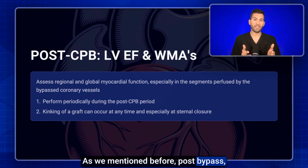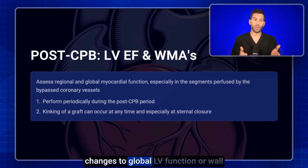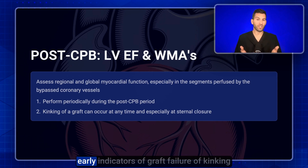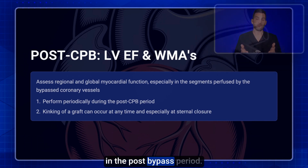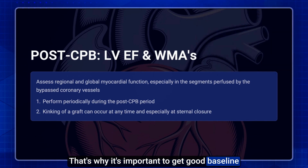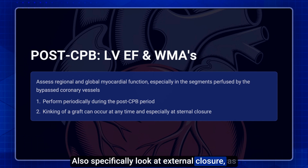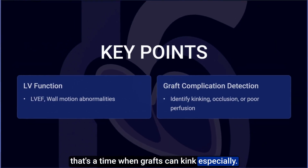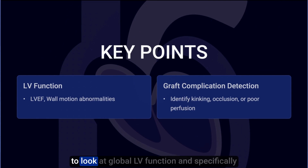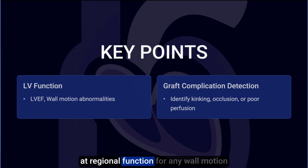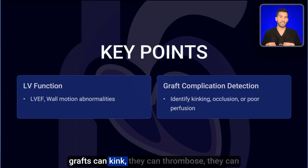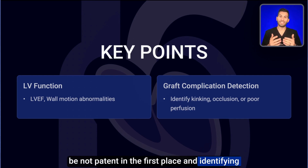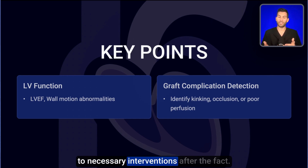Post-bypass, keep an eye on any changes to global LV function or wall motion abnormalities, as these may be early indicators of graft failure, graft kinking, or thrombosis. Monitor periodically throughout the post-bypass period. That's why it's important to get a good baseline assessment pre-bypass — you need something to compare it to. Also pay specific attention at sternal closure, as that's a time when grafts can kink especially. The key takeaway from part one: assess global LV function and regional wall motion abnormalities both before and after bypass, because grafts can kink, thrombose, or not be patent, and echo findings can guide your surgeon to necessary interventions.